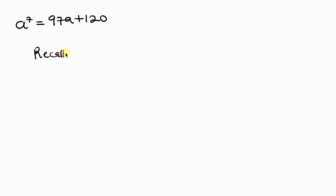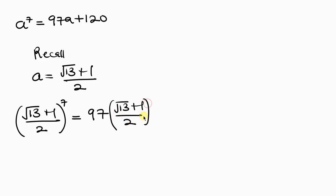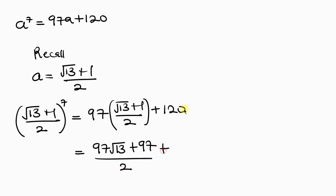Recalling our substitution, a equals the square root of 13 plus 1, all over 2. Substituting into a to the 7th equals 97a plus 120, we get 97 times (square root of 13 plus 1) over 2, plus 120. This becomes 97 times the square root of 13, plus 97, all over 2, plus 120.